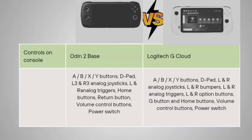The Auden 2 Base also has volume control button and power switch. The Logitech G Cloud is giving you A, B, X, Y buttons, D-pad, L and R analog joysticks, L and R bumpers, L and R analog triggers, L and R option buttons, G button, home button, volume control button, and power switch.